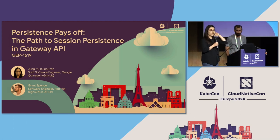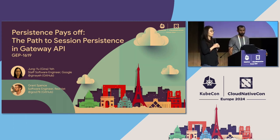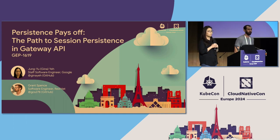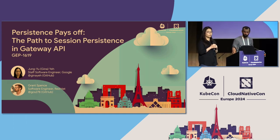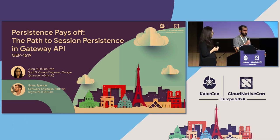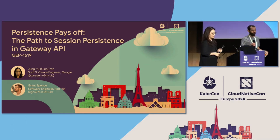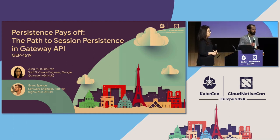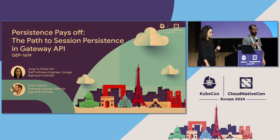My name is Gina Yeh. I'm a software engineer at Google leading the design and implementation effort of session persistence in gRPC route and HTTP route. And today I'm presenting with Grant. I'm Grant Spence. I'm a software engineer at Red Hat and I've been leading and championing the session persistence GEP with Gateway API.